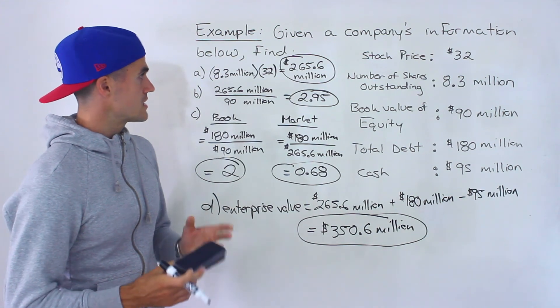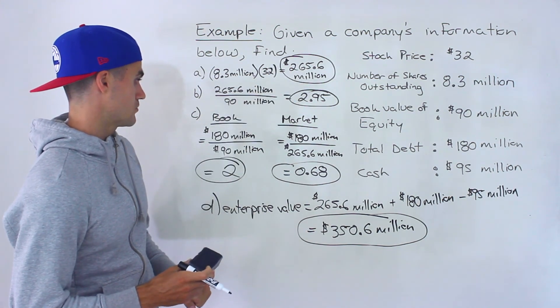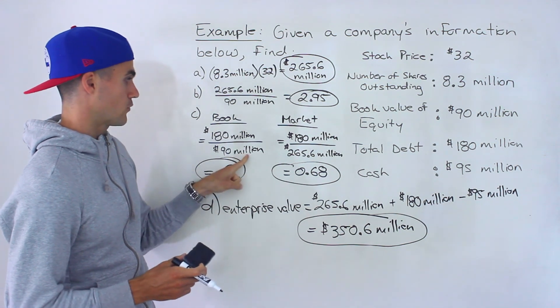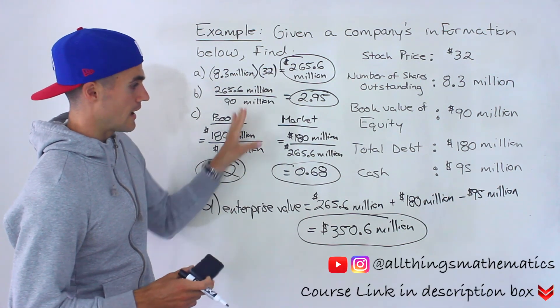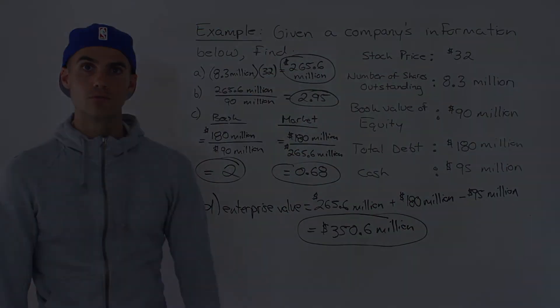All right. So the biggest step was probably finding that market cap because notice we used it pretty much everywhere except for this portion here. But once you get that, then finding the ratios, finding the enterprise value is not too bad.